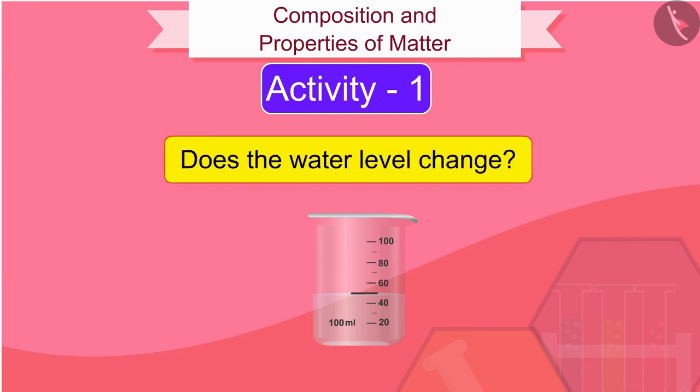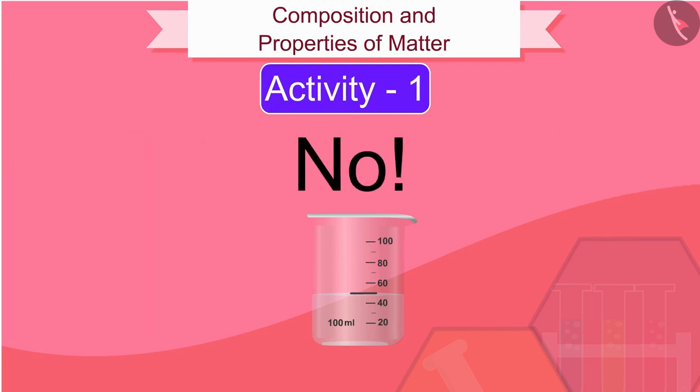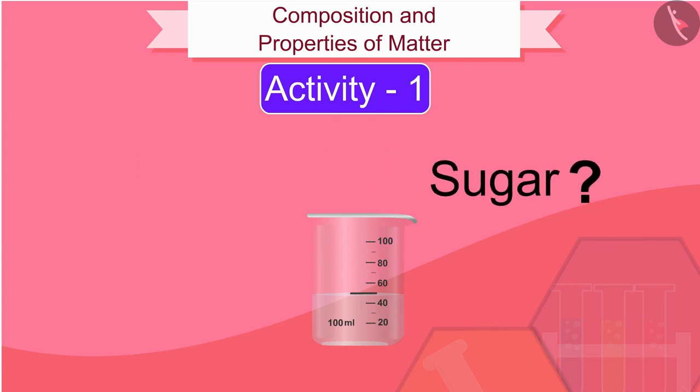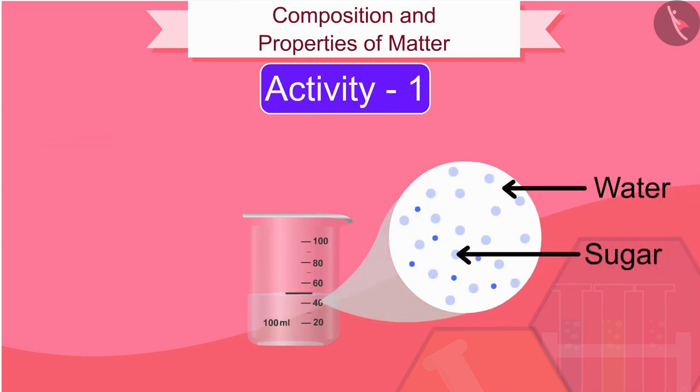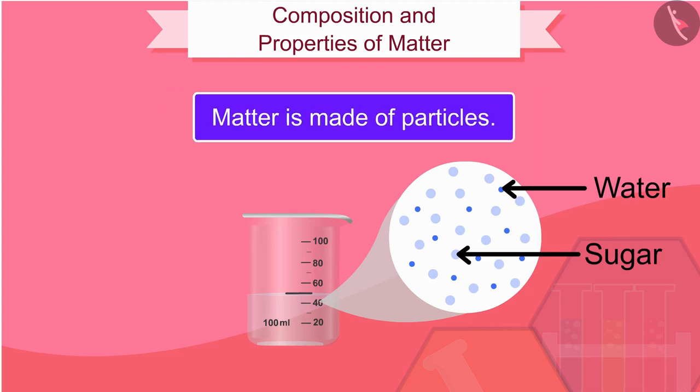No, the water level doesn't change. How did this happen? What happened to the sugar dissolved in the water? When we dissolve sugar in water, the particles of sugar get into the spaces between the particles of water. From this activity we can conclude that matter is made of particles.